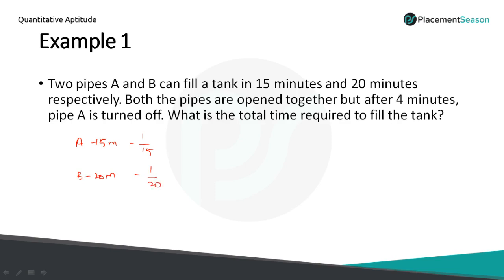Both the pipes are opened together but after 4 minutes pipe A is closed, so until 4 minutes both pipes are working together. Adding their 1-minute work, taking the LCM, you get 7 by 60. Both pipes are operated for 4 minutes, so 7 by 60 into 4 equals 7 by 15.